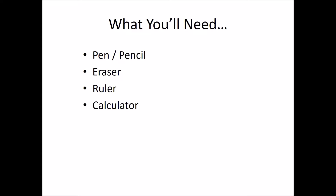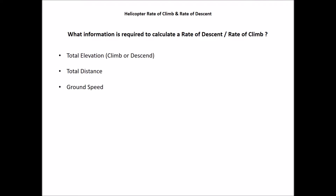Let's take a look at what information you actually require to calculate your helicopter rate of climb or rate of descent. Quite simply, three things: total elevation you're going to be climbing, the total elevation you're going to be descending, the total distance, and the ground speed. Once you've got that information, what are the steps to calculate the rate of descent or rate of climb?